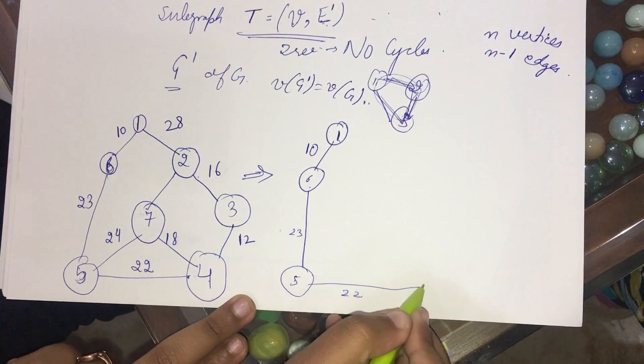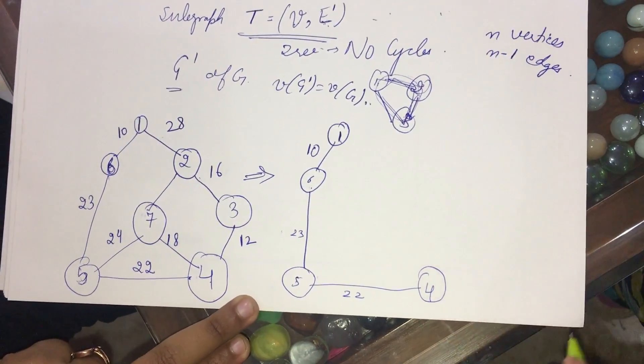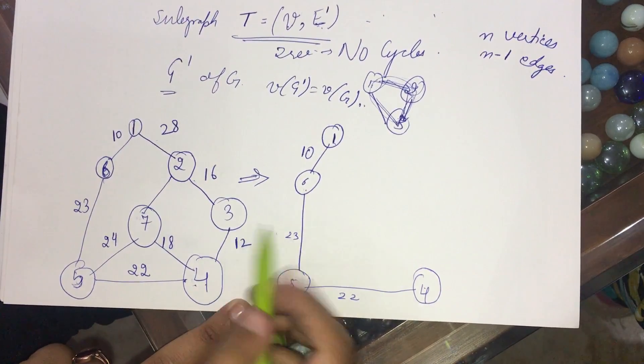I write down the cost along with it. So I choose 4. And after 4, I see 4 can go to 7 and 3. So I choose 3. Why? Because 3 has the smaller cost.